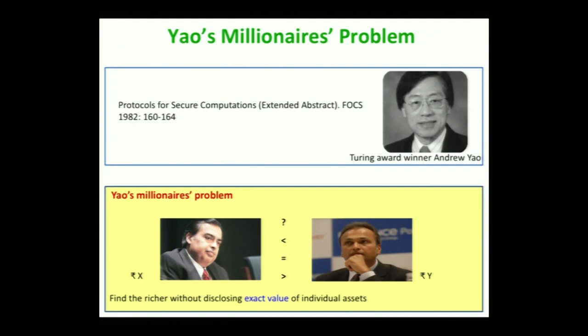Of course, if they make their assets public or let the other party know, then both of them can compute who is richer. The challenge is that they want to find out who is richer without disclosing the exact assets they have.